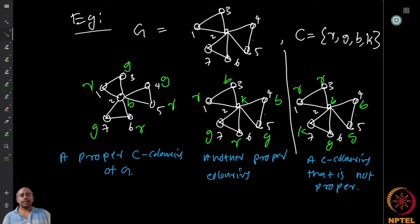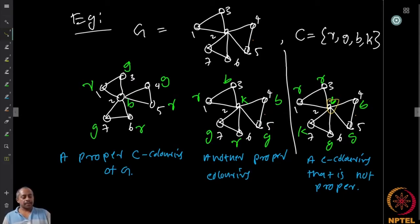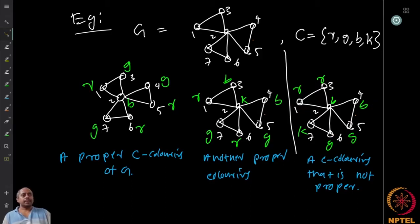Here is another proper coloring where I use black (K) in the middle, then R and B at other vertices — another valid proper coloring. Here is a third coloring which is not proper: I use R and R at two adjacent vertices, so adjacent vertices get the same color. It is a C-coloring but not a proper one. We can ask: what is the minimum number of colors that give a proper coloring?